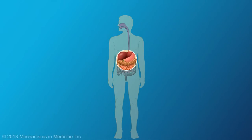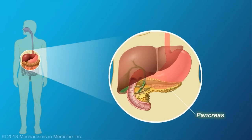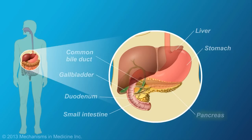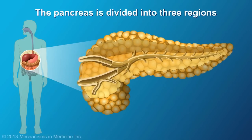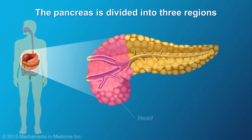Pancreatic cancer affects the pancreas, a digestive system organ located in the upper abdomen. Anatomically, the pancreas is divided into three regions – the head, body, and the tail.